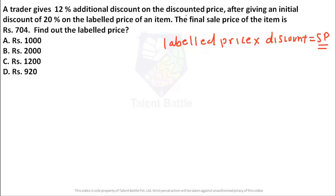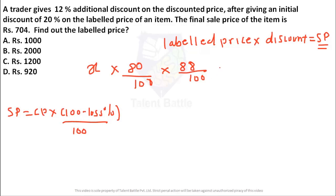A trader gives 12% additional discount on the discounted price after giving initial discount of 20%. So suppose I will consider the label price as 100x. Then 20% of the discount, how can we give 20% of the discount? 20% of the discount is called as 80 by 100. The normal formula for selling price is CP into 100 minus loss percentage divided by 100. Loss percentage is nothing but like discount percentage. So how we can give discount of 20% on that value? That value into 100 minus 20% by 100. Again the additional 12 percentage discount has been given. Now how can we give 12 percentage discount on this value? Into 88 by 100, like 100 minus 12 by 100 which is 88 by 100. And then I will get the selling price.